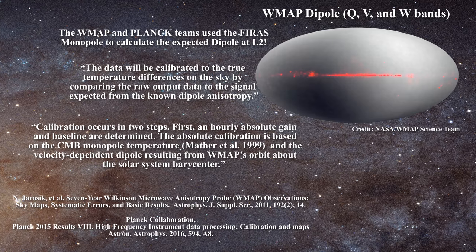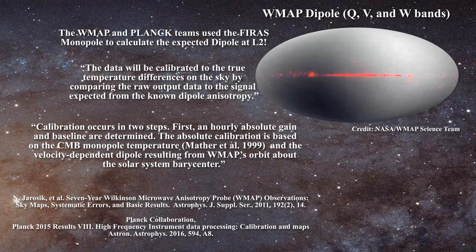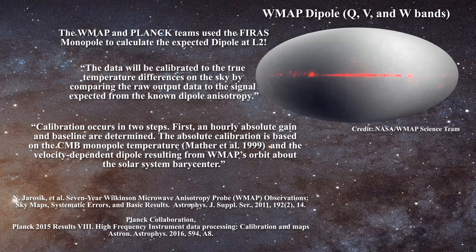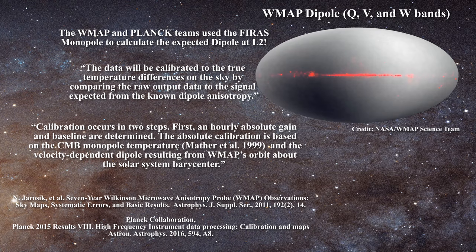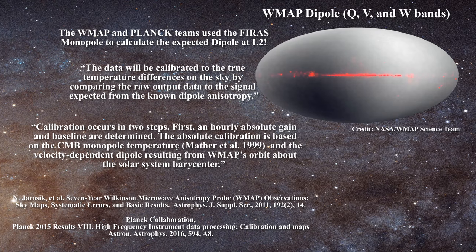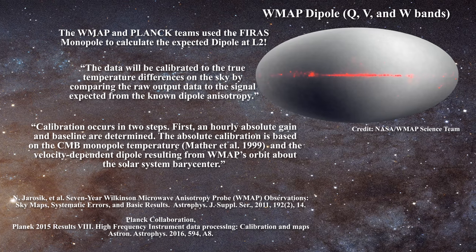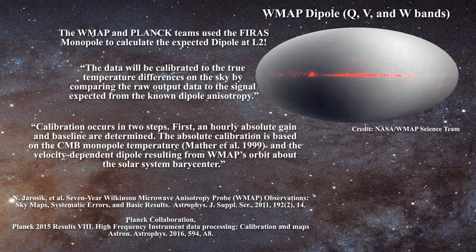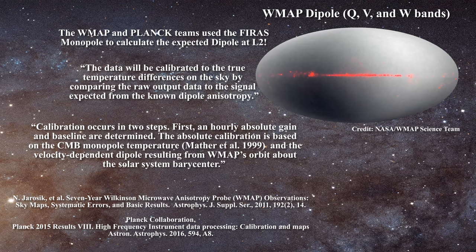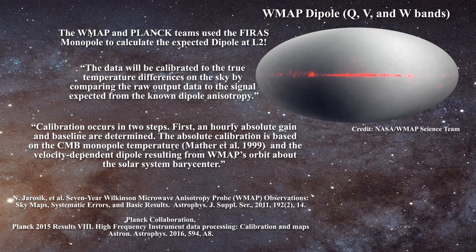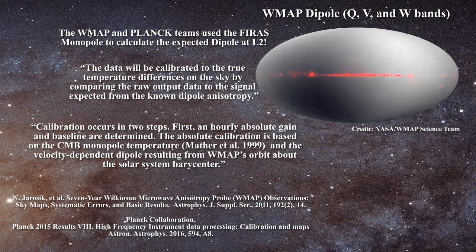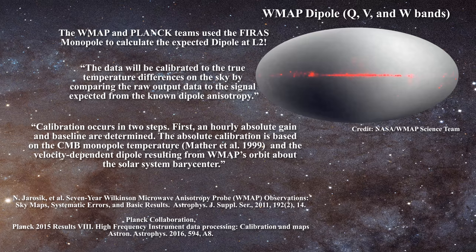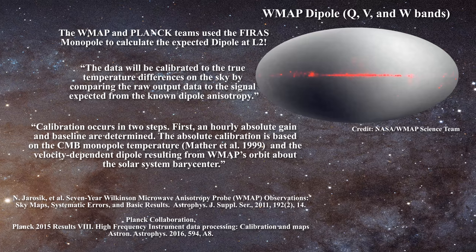So you see, the WMAP and Planck teams are calibrating their instruments by computing a dipole which assumes that the monopole at L2 is equal to the value measured by COBE in Earth orbit. As a result, it is impossible for these teams to compute a monopole value at L2 using the dipole, as had been done by the COBE team.